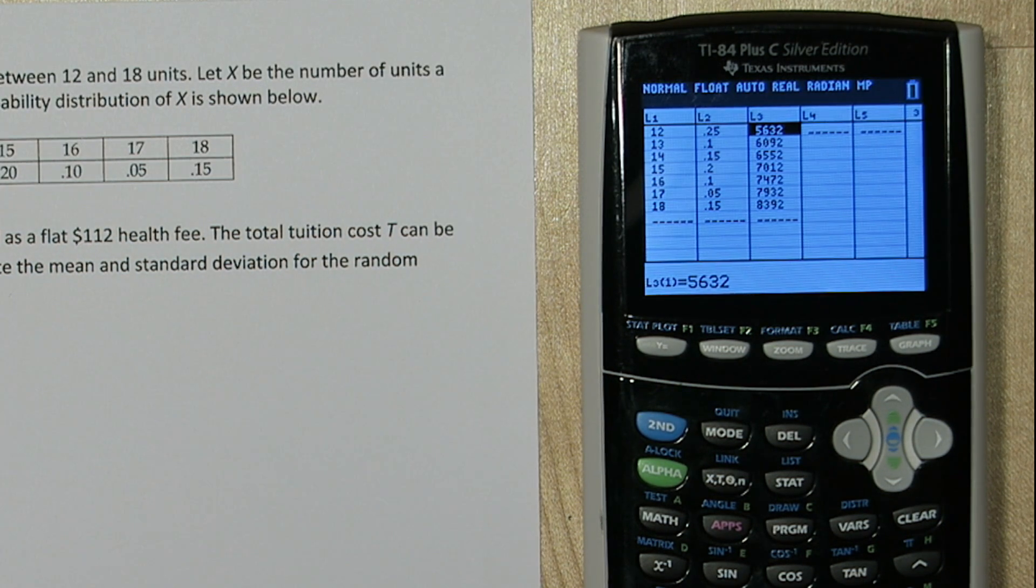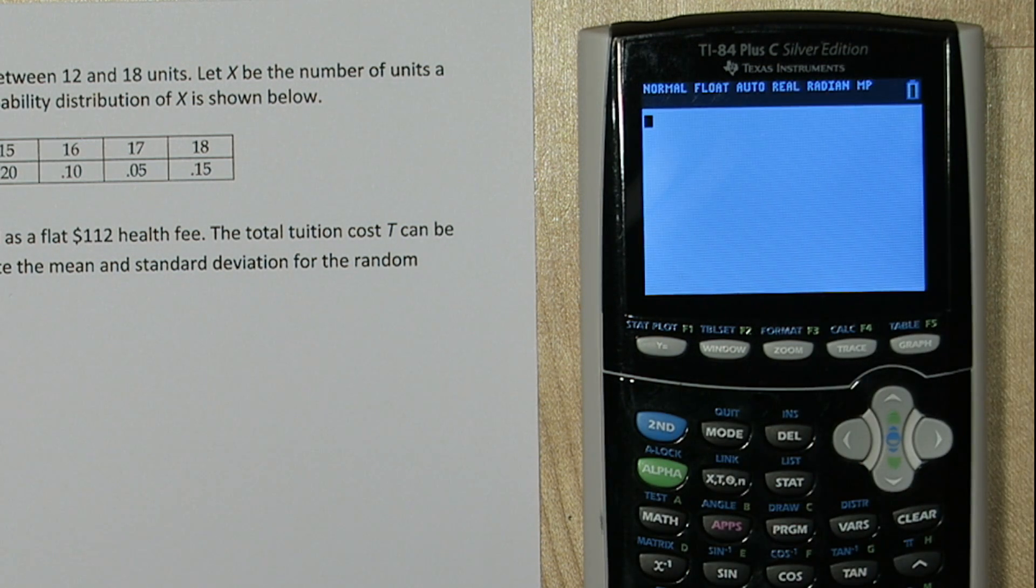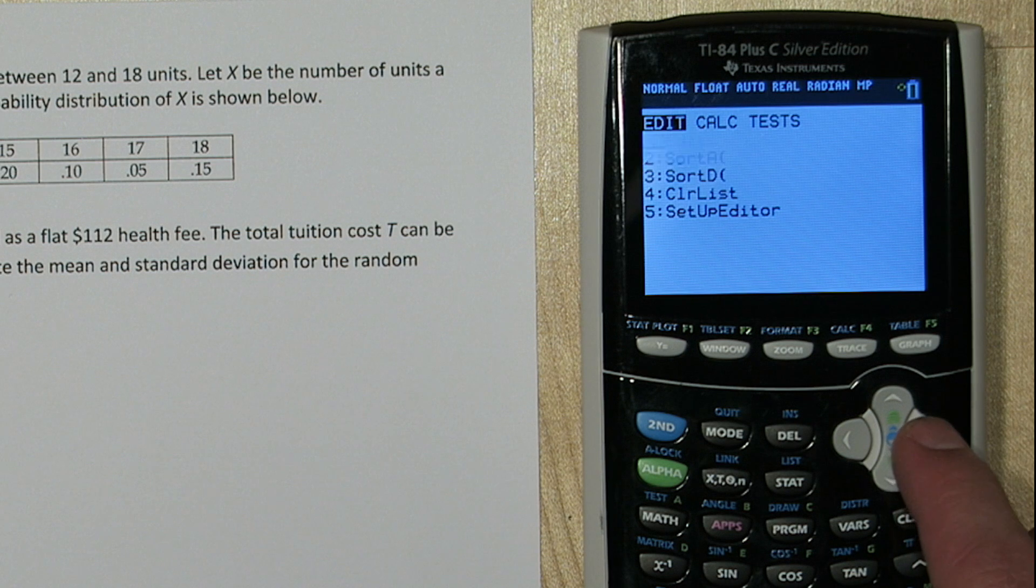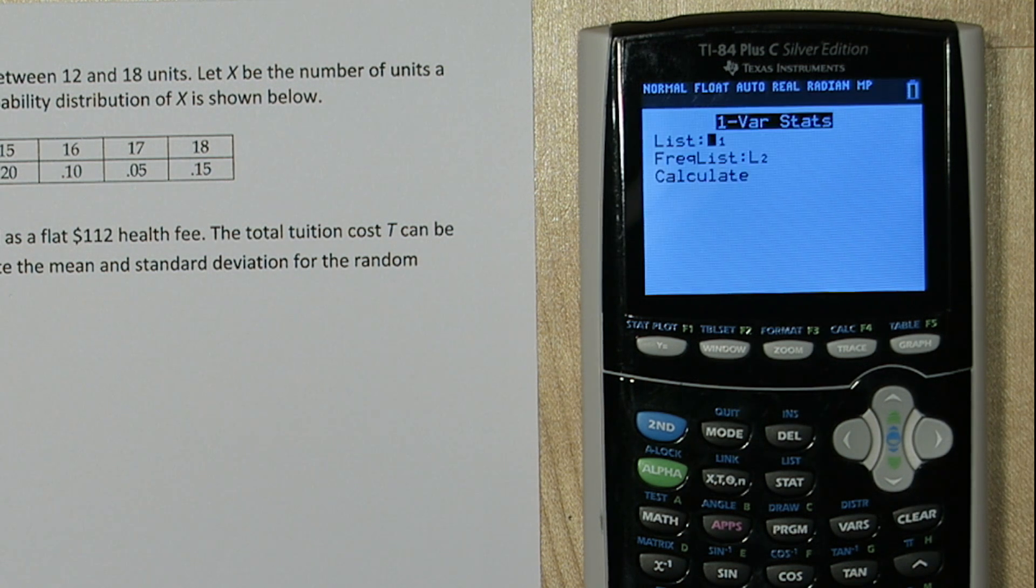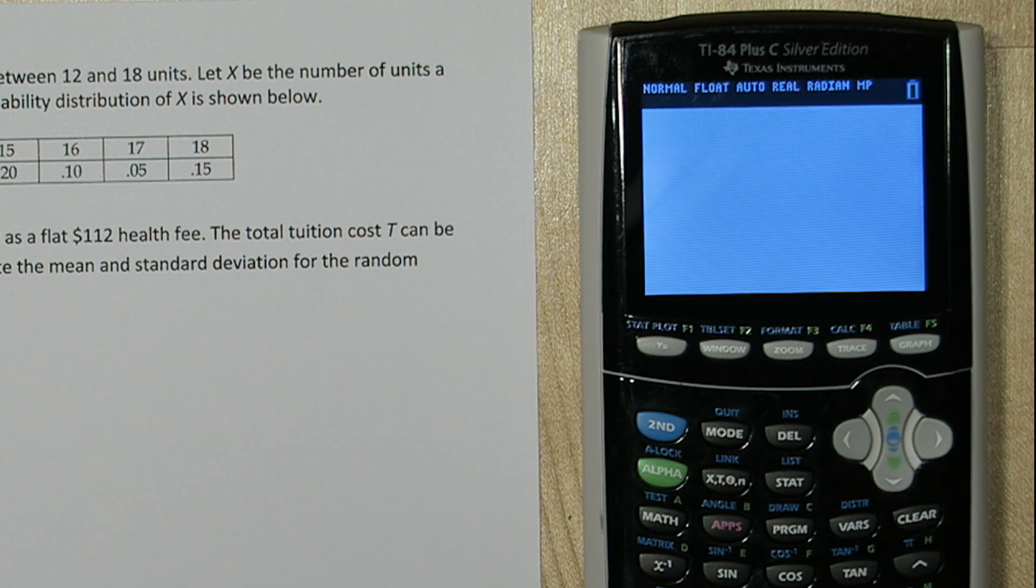To find the mean and standard deviation, press 2nd, quit, and stat again, go to calculate, and all we're going to do is change our list to list 3. We still want to have our same frequencies, the probabilities stored in list 2.